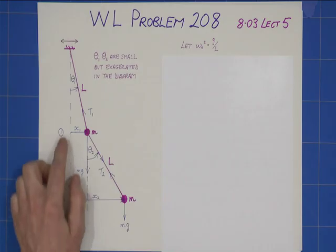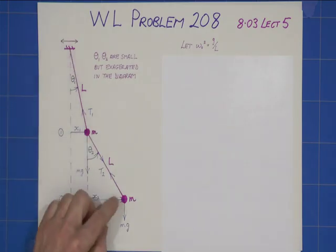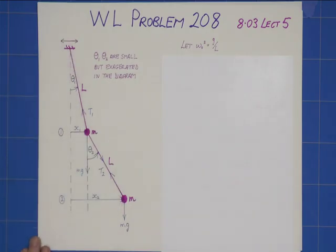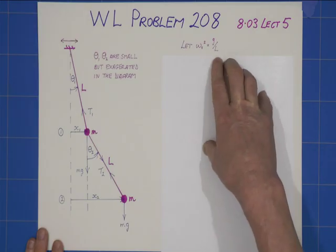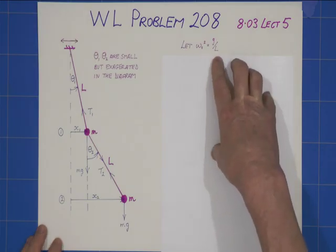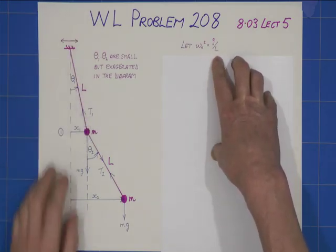And I've defined an x2, an x1, a tension T1, a tension T2. Clearly, we have mass mg and mass mg. I also define omega nought to be the period of a single simple pendulum of length L.